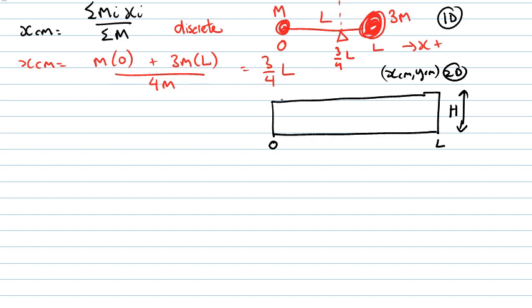But more importantly, it's not discrete, it's a continuous object. So you're going to ask yourself, well, where are the masses here? Well, they're everywhere. So we have to basically turn this summation into an integral.